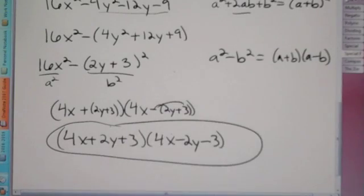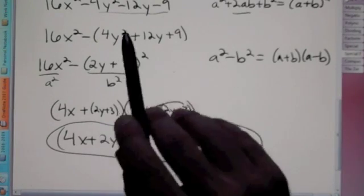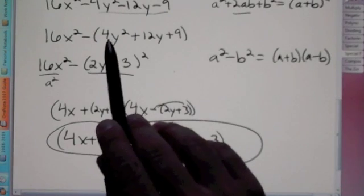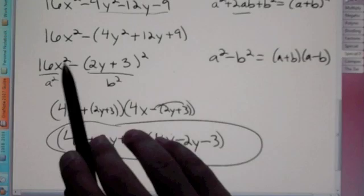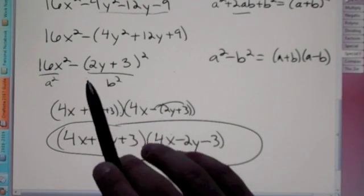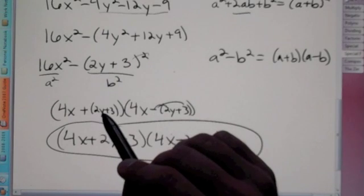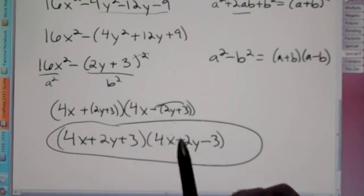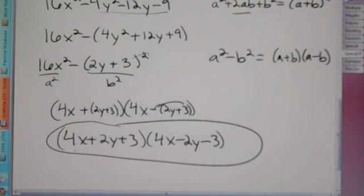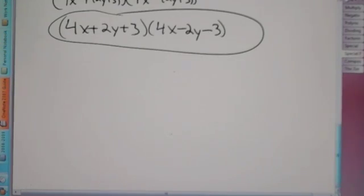This is now in the format of a squared minus b squared. The square root of 16x squared is 4x, and the square root of (2y + 3) squared is just 2y + 3. So we get (4x + (2y + 3))(4x - (2y + 3)). Since the second has a minus, distribute the negative: final answer is (4x + 2y + 3)(4x - 2y - 3).